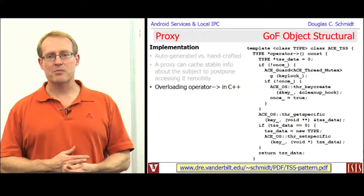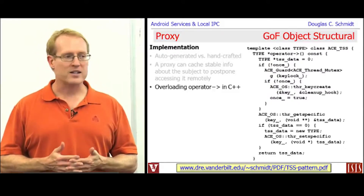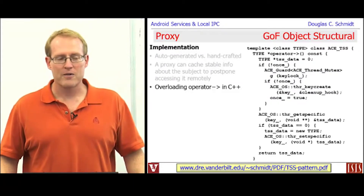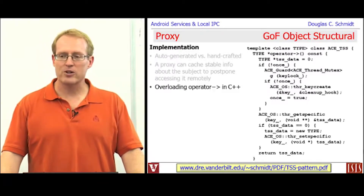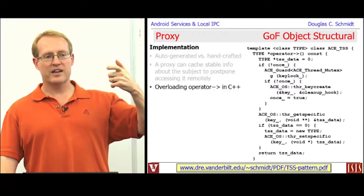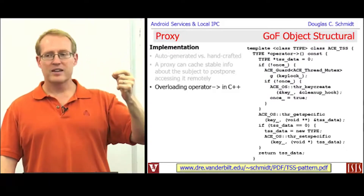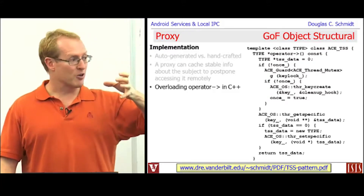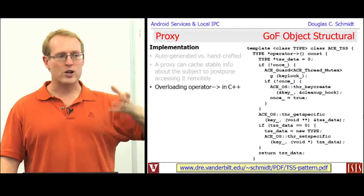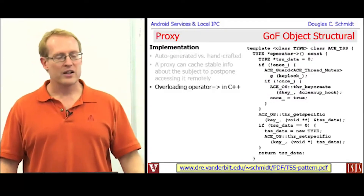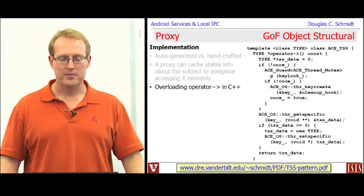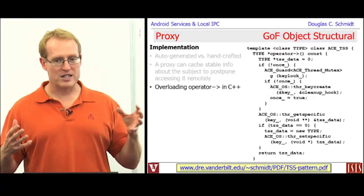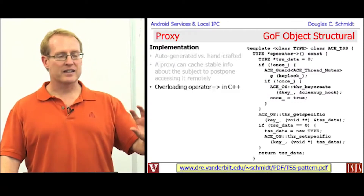Another implementation consideration: some languages give you pretty cool support built into the language for proxies. C++, for example, has an interesting feature called the delegation operator, or operator arrow, sometimes called the smart pointer operator. Basically, you can use this operator to invoke something through a proxy using operator arrow that looks like it's actually making a method call, but in fact the operator arrow is intercepting the original call, doing something else, and then returning a result. The compiler then generates code to redelegate that call to the object returned by the proxy. This is used in thread-specific storage and a variety of other techniques for making proxies look like pointer access, thereby hiding the details from application developers.